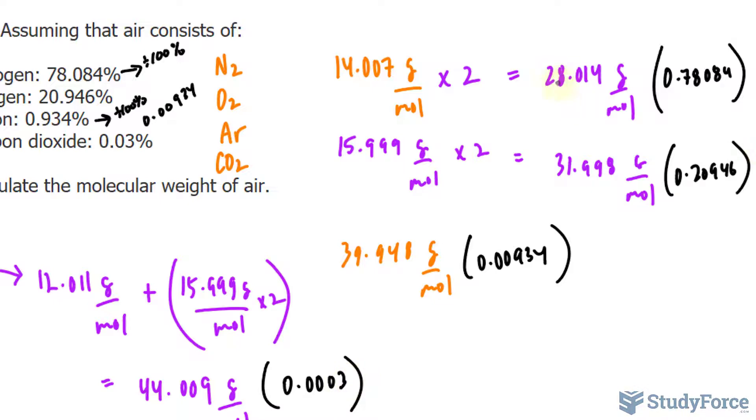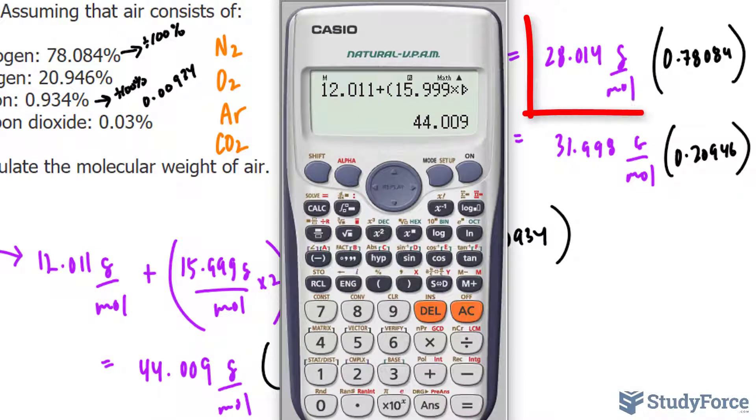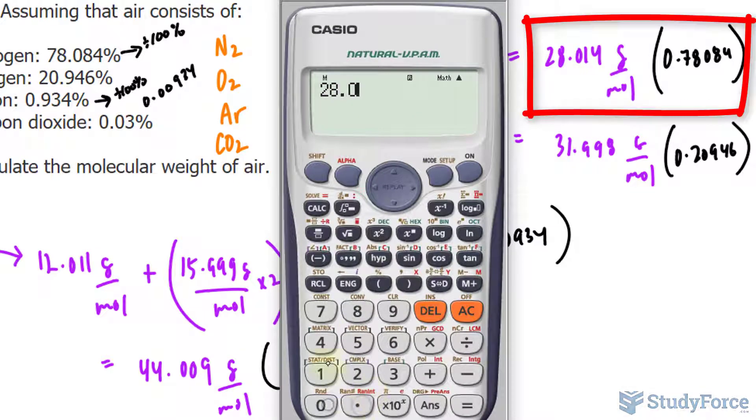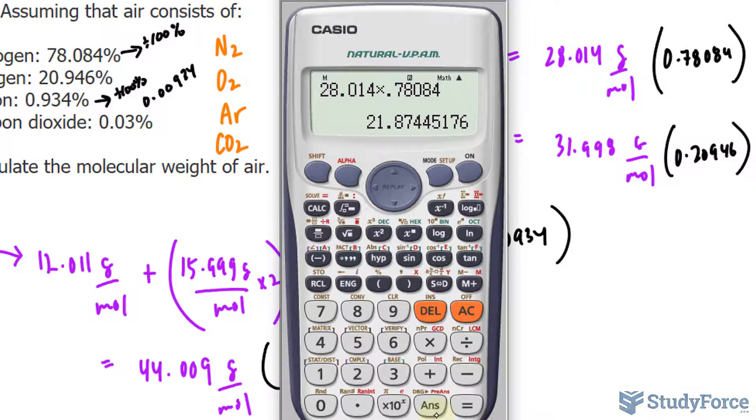From here, we multiply them all out and sum them up. For example, taking 28.014 times 0.78084 gives us the percent composition of nitrogen being 21.874. You will repeat this for the other three, and then add them up.